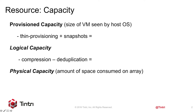Provision capacity is the size of the virtual machine before thin provisioning, compression, or deduplication. This is the size of the VM that's seen by the host OS. Logical capacity is the size of the virtual machine after thin provisioning, but before compression and deduplication. This also includes the size of snapshot data.